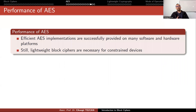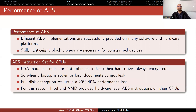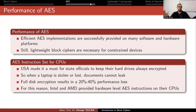Efficient AES implementations are successfully provided on many software and hardware platforms, though lightweight block ciphers are still necessary for constrained devices. Since 2010, CPUs include hardware-level AES instructions. This came about because the USA mandated that state officials keep their hard drives encrypted at all times — for example, to prevent official document leaks when a laptop is stolen at an airport.